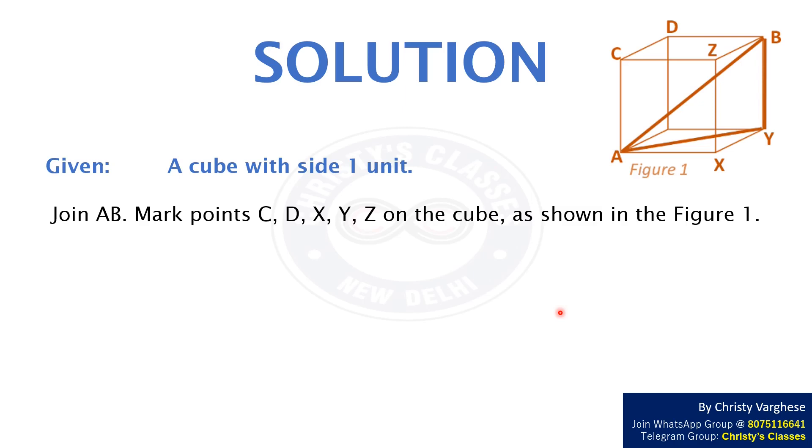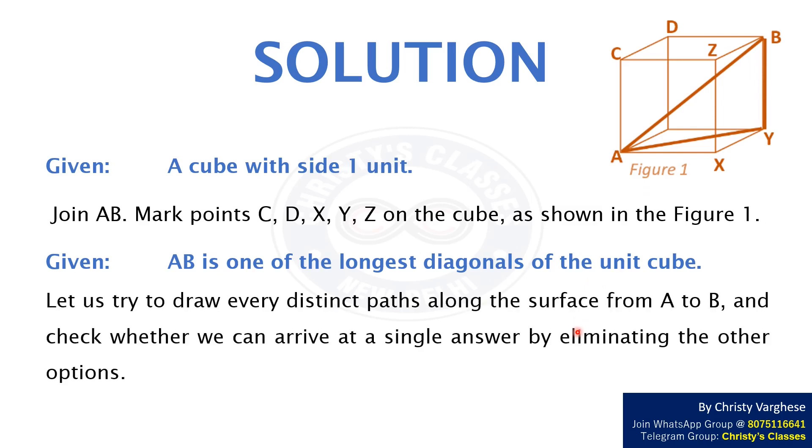Given that AB is one of the longest diagonals of the given cube. Let us try to draw every distinct path along the surface from A to B and check whether we can arrive at a single answer by eliminating the other options.